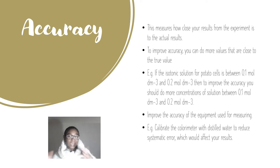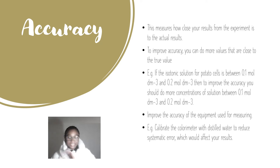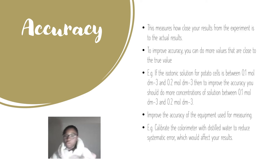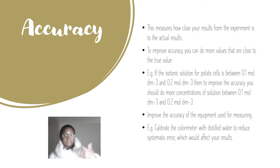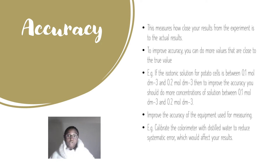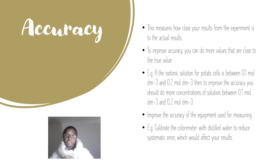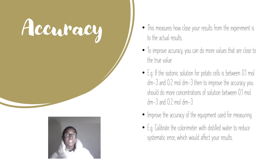Accuracy measures how close your results from the experiment are to the true and actual results. To improve your accuracy, you can do more values that are close to the true value. Examiners are looking for you to say: do more values close to or between these ranges. For example, if the isotonic solution for potato cells is between 0.1 and 0.2 moles per decimetre cubed, you should do more concentrations of solution between 0.1 and 0.2 moles per decimetre cubed.